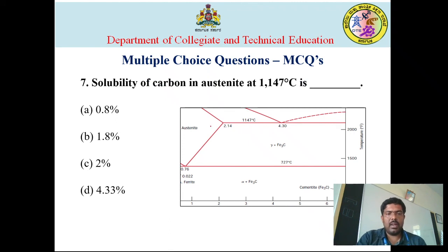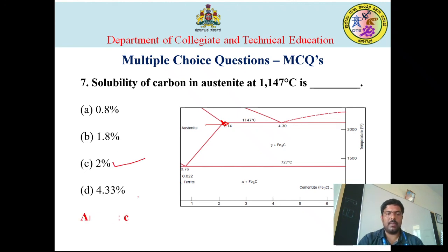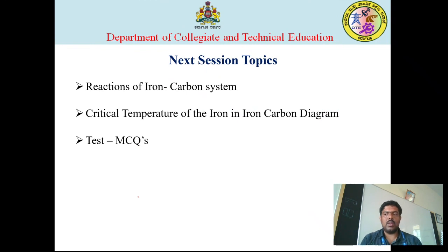The solubility of carbon in austenite: the austenite region shows that the maximum percentage of carbon that can be added is 2%. So the correct answer is 2%. In the next session, we are going to discuss the various reactions of the iron-carbon diagram, the different critical temperatures of the iron-carbon diagram, and solve some test questions and MCQs.